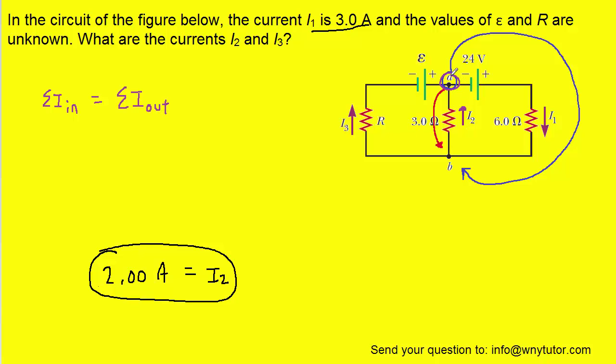Looking at junction A, we can see that the current marked I3, if we follow it along, is moving in to that junction. Also, current I2, since we switched its direction, is moving in to that junction. Current I1, however, if we follow it backwards a little bit, we can see that it is flowing out of that junction.